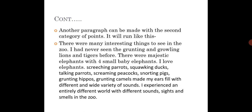I shall construct another paragraph with the second set of points. Topic sentence: 'There were many interesting things to see in the zoo.' I had never seen the grunting and growling lions and tigers before. There were majestic elephants with four small baby elephants. Screeching parrots, squawking ducks, stalking parrots, screaming peacocks, snorting pigs, grunting hippos, and grunting camels filled my ears with a wide variety of sounds. Concluding sentence: 'I experienced an entirely different world with different sounds, sights, and smells in the zoo.' I followed the same paragraph structure theorized in my previous session.